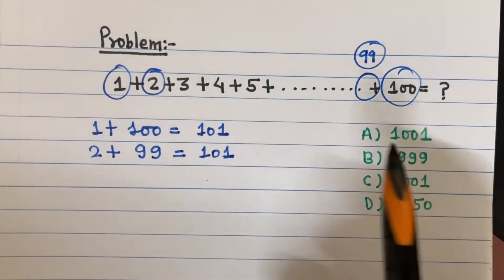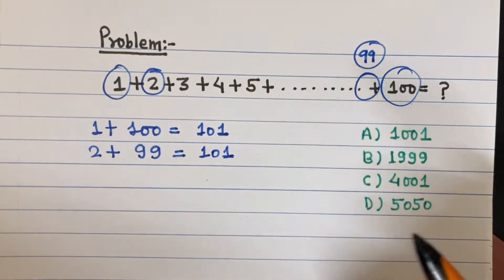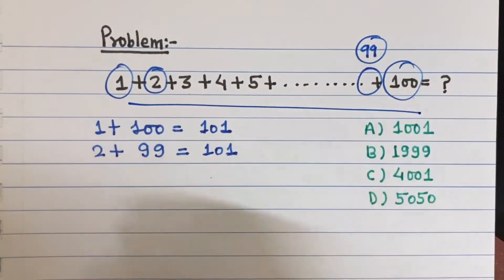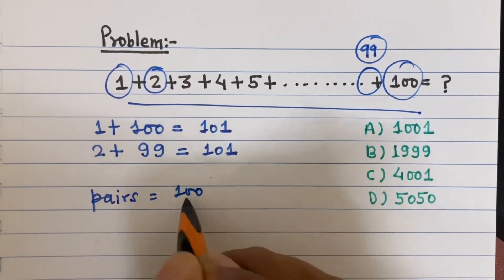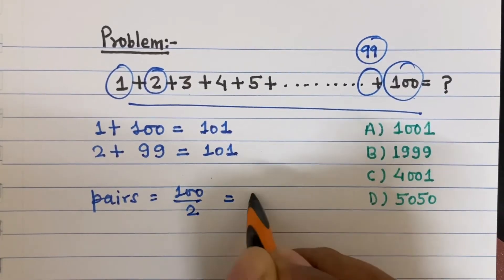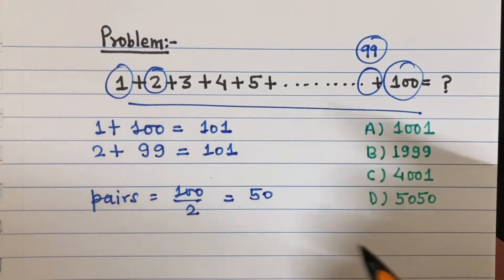Now we have to see how many pairs there are. Since there are 100 numbers, the number of pairs would be 100 divided by 2, equals 50 pairs.